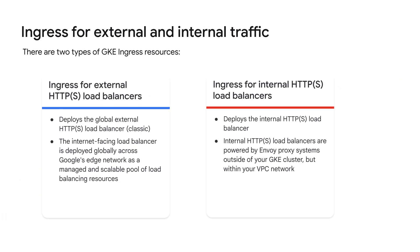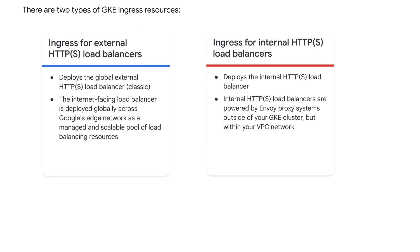Finally, let's explore GKE ingress, which exposes Kubernetes services to the internet. There are two GKE ingress types. Ingress for external HTTPS load balancers deploys the global external HTTPS load balancer — an internet-facing load balancer deployed globally across Google's Edge network as a managed and scalable pool of load balancing resources. The second type, ingress for internal HTTPS load balancers, deploys the internal HTTPS load balancer, powered by Envoy proxy systems outside of your GKE cluster but within your VPC network.